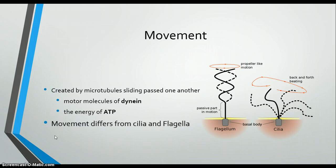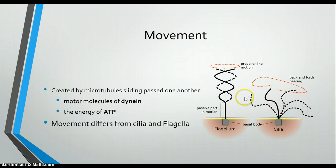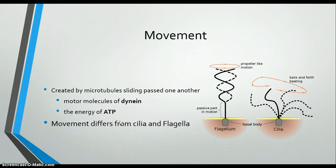So their movement: the flagella moves in a motor-like pattern, which allows the main movement to be this way. The cilia moves in a back-and-forth pattern — the back pattern is called the recovery stroke, and the frontward pattern is called the power stroke, so its main movement goes this way. The movement is allowed by motor molecules and the energy of ATP.